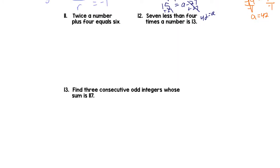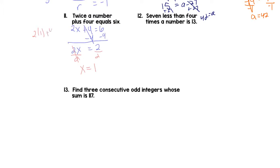Now we're going to write an equation and solve. Twice a number — we're going to make our number equal x. So 2x plus 4 equals 6. Now we want to get our x term alone, so we'll subtract 4. We've got 2x; the 4s cancel and that equals 2. We want to get x alone, so we divide by 2. We've got x is 1. Let's plug it in and test it out: 2 times 1 plus 4 — that's 2 plus 4, or 6, which is what we've got.